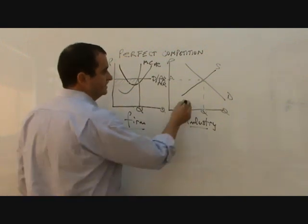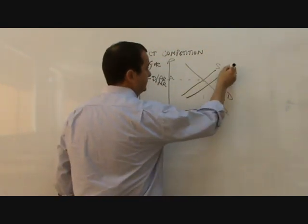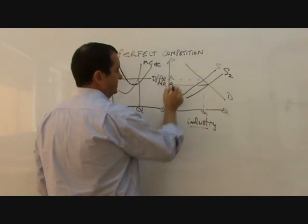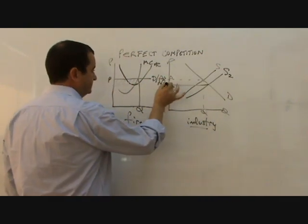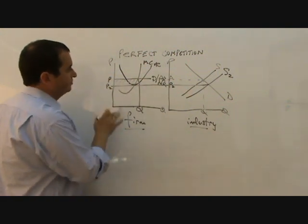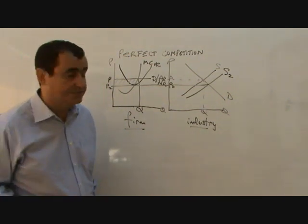As they enter the industry, the supply in the industry expands. Driving down the price. And as the price falls, so the abnormal profits for individual firms are eroded.